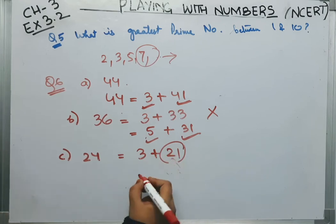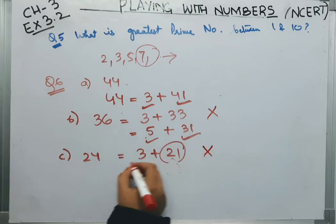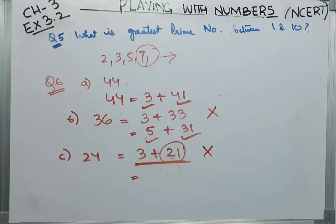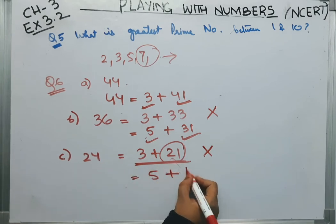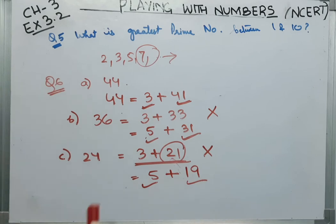Now, we can do one more thing is, we can take this as, so, this is not, this question is not correct. So, what we will do is, we can write 24 as 5 plus 19. Now, here both these terms, they are prime numbers and odd numbers. So, 24 can be written as 5 plus 19.